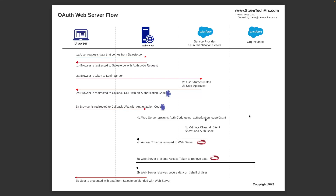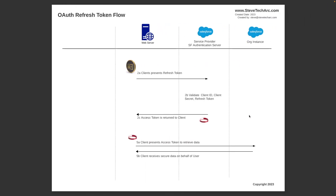What would happen is the web server would store the refresh token securely on its server and then be able to represent it. The web server would have the refresh token for that particular user stored securely. It could present it to the auth server along with the client ID and the client secret, and then get back a fresh access token. A key element of this flow is that the web server needs to be able to store that refresh token securely.